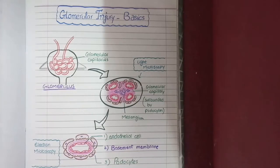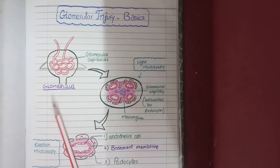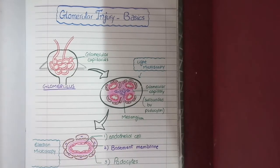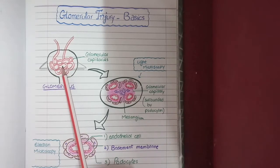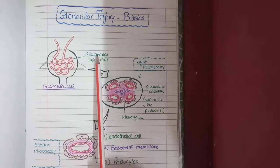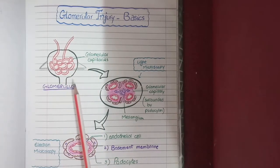Kidneys are made up of millions of nephrons and each nephron has its own cup-shaped structure called the glomerulus. Here you can see the diagram of a glomerulus. This loop of vessels that forms a tuft of capillaries are glomerular capillaries, and surrounding them is the Bowman's capsule.